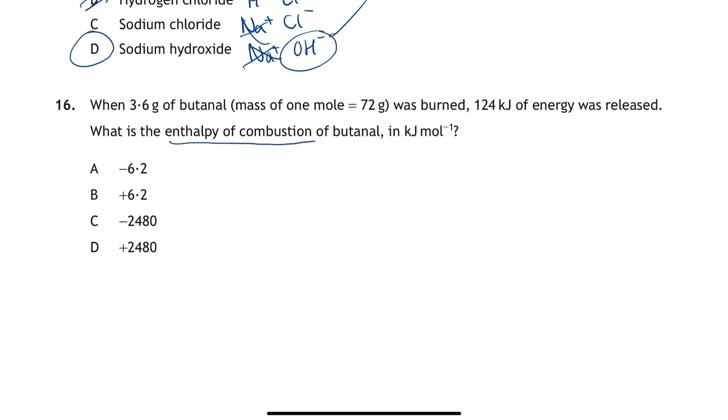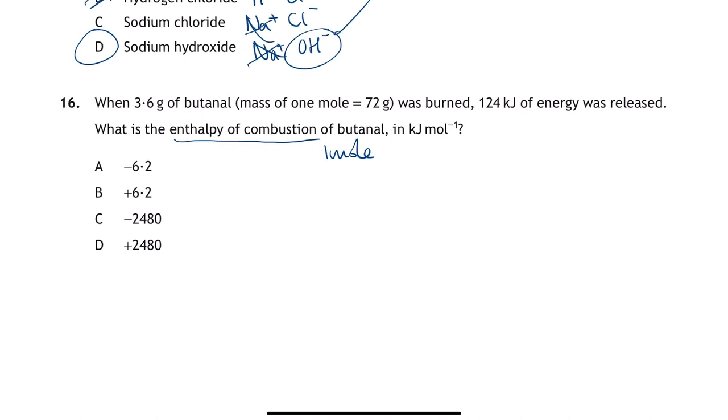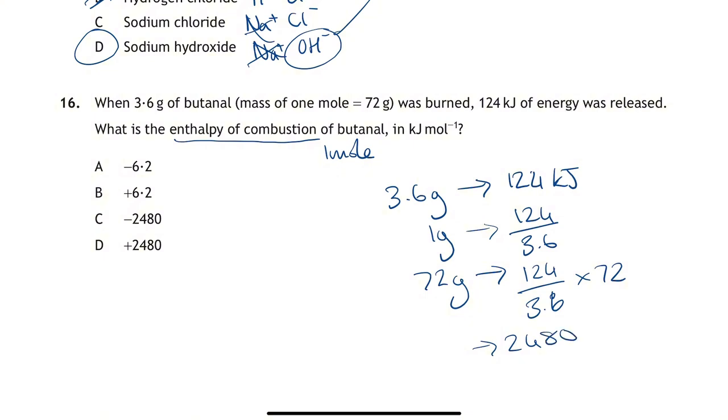Here, you need to know that enthalpy of combustion is for one mole of a substance. It tells you one mole of butanol is 72 grams. If 3.6 grams gives out 124 kilojoules, we're looking for how much 72 grams could give out. Scale to 1 gram first, then multiply up to 72. So 124 divided by 3.6 times 72 gives us 2480. Enthalpy of combustion is always negative, so it will be C.